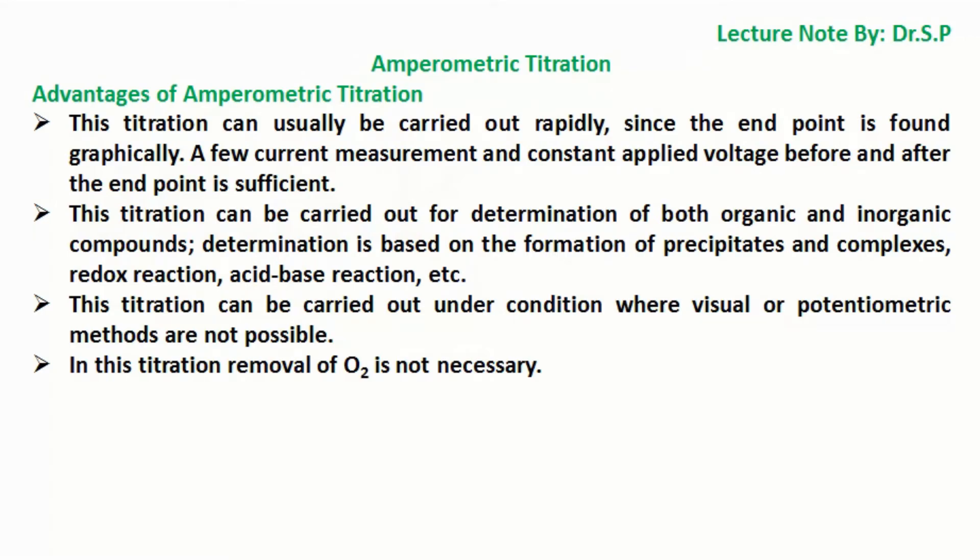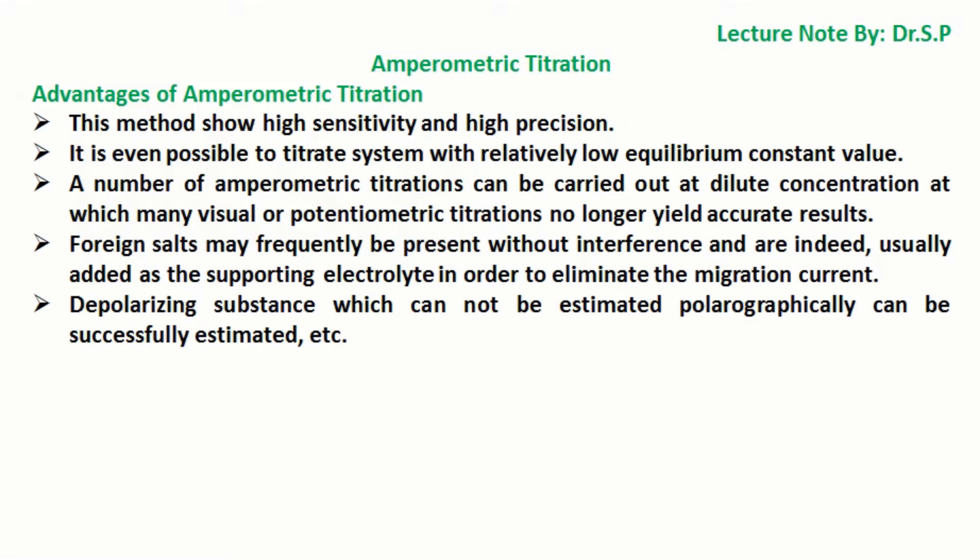In this titration removal of oxygen O₂ is not necessary. This method shows high sensitivity and high precision. It is even possible to titrate systems with relatively low equilibrium constant value. A number of amperometric titrations can be carried out at dilute concentration at which many visual or potentiometric titrations no longer yield accurate results.